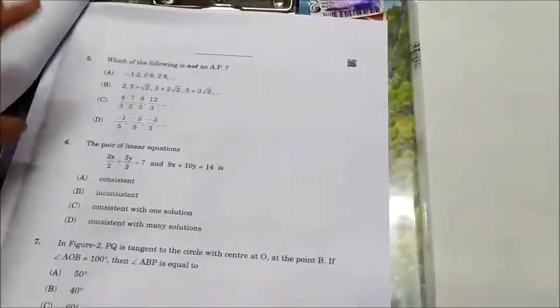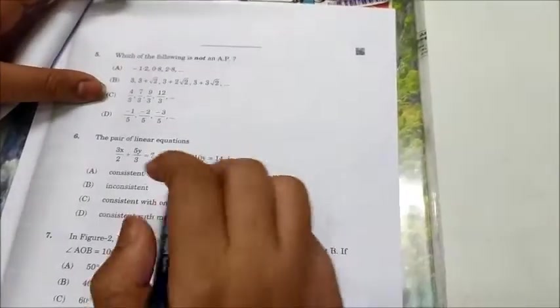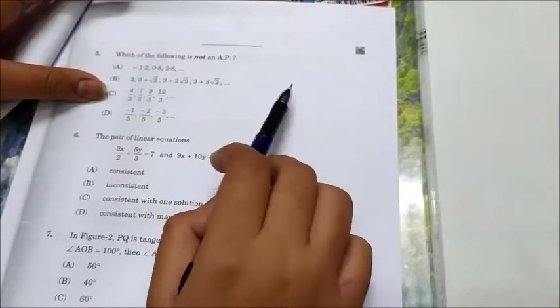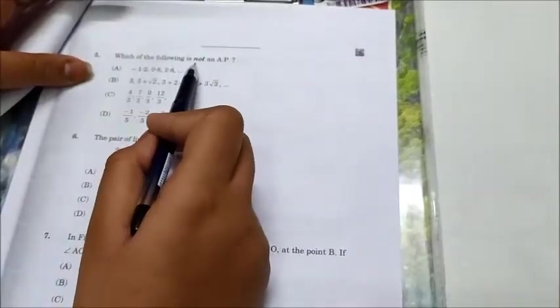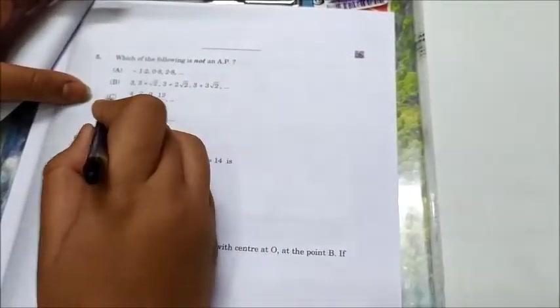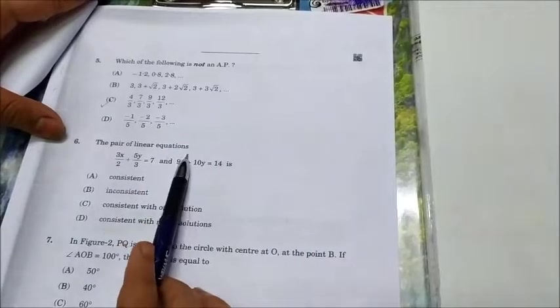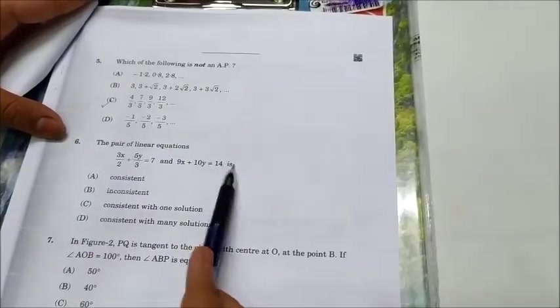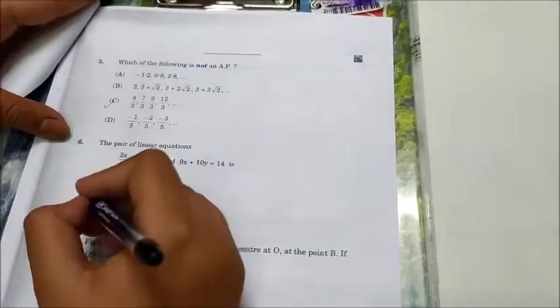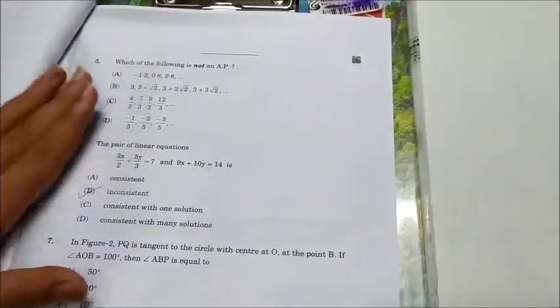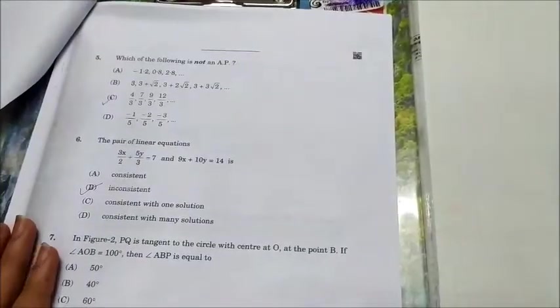Next question number 5, so for this you need to write t₁, t₁ - d. So when you will do that, you will find that C is not an AP. Next, the pair of linear equations, the answer is B: inconsistent, consistent. If you want to know how the answer came, then you can check out the set 2 question answers video.